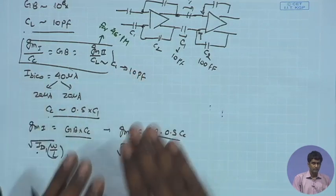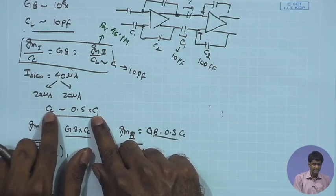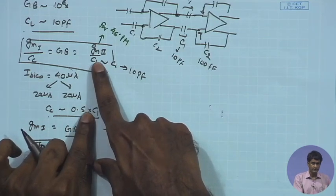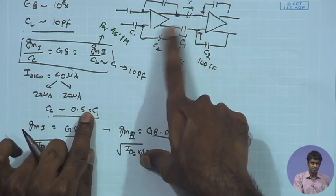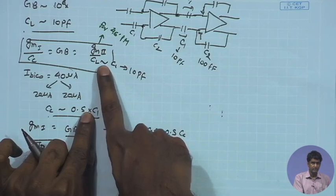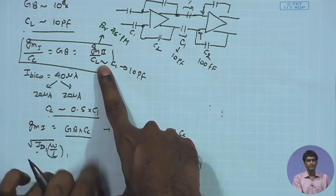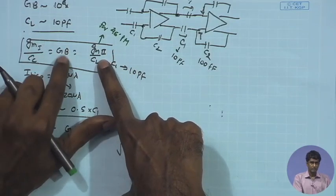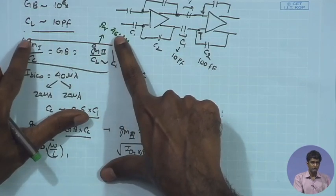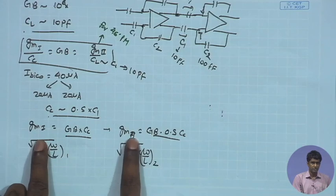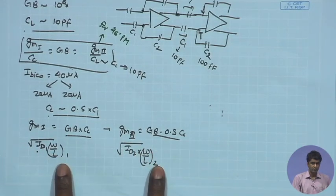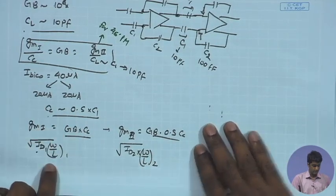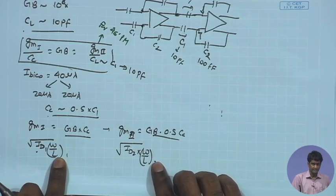For the power budget, we assume a total bias current of 40 µA divided into 20 µA and 20 µA. We keep Cc significantly smaller than CL. The CL comes from the input capacitance of the next stage, specifically C1 of the feedback amplifier. We keep Cc at roughly half of C1. For the given gain-bandwidth product, we obtain the values of gm1 and gm2. From the power budget we have ID1 and ID2, giving W/L of M1 and W/L of M2.